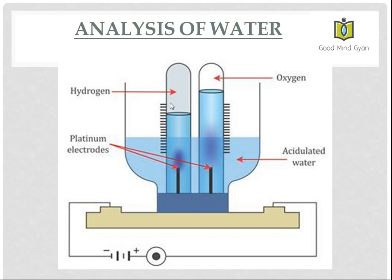How here water which is a compound is broken down into its two elements hydrogen and oxygen. Hydrogen at the negative electrode and oxygen at the positive electrode. So this is analysis of water.